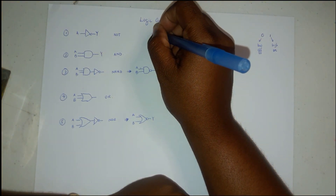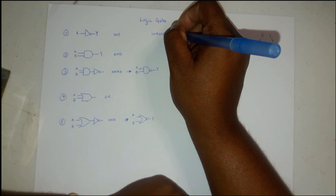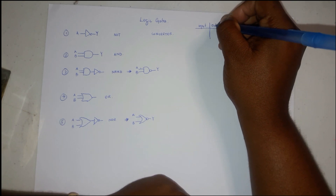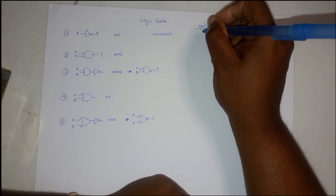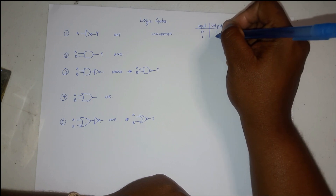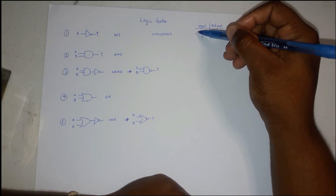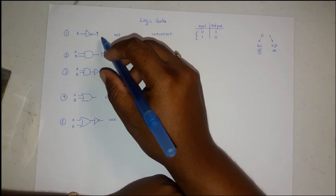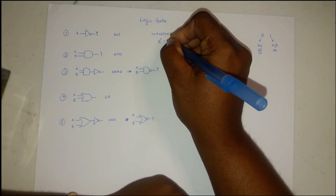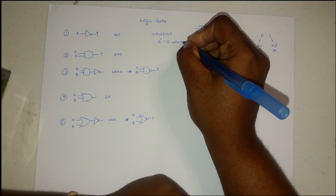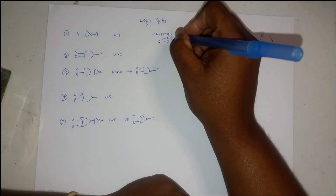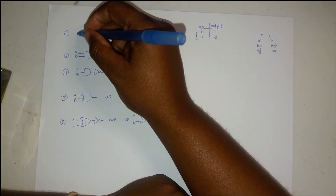The NOT gate is called the converter. For its truth table, we have the input and we have the output. If input A is 0, the output will be 1; if input A is 1, the output will be 0. To work out how many outcomes: since this is binary we use the number 2, and since there is one input we raise it to the power of 1 — so we have 2 outcomes.